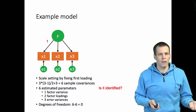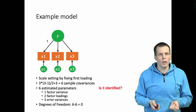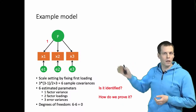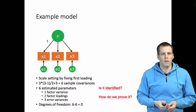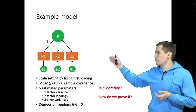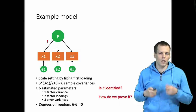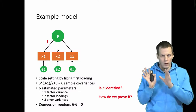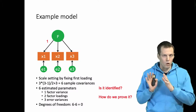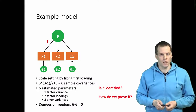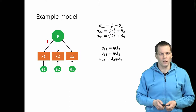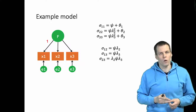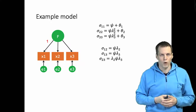So how do we know this is identified, and how do we prove it? The idea of identification is that if we know the correct population data, can we calculate unique estimates for all the parameters of the model from that data? Identification concerns the model and the population, not really the sample. There is also the issue of empirical under-identification, which I'll discuss later. So let's start proving the identification: if this model is correct, the population covariances should correspond to the model-implied covariances.